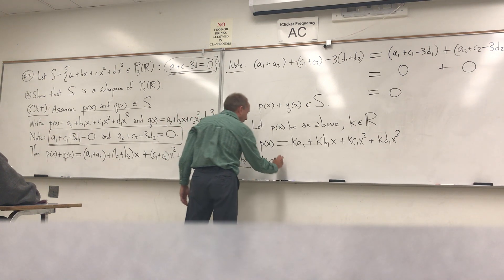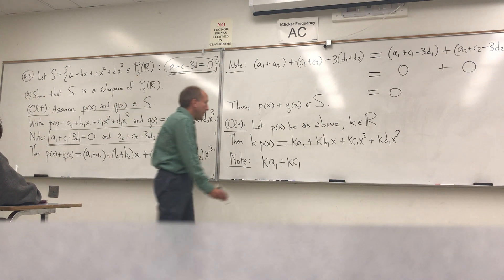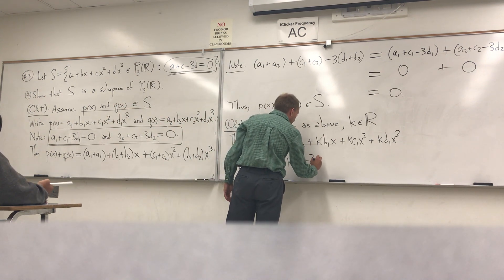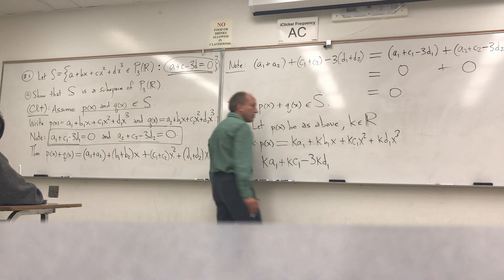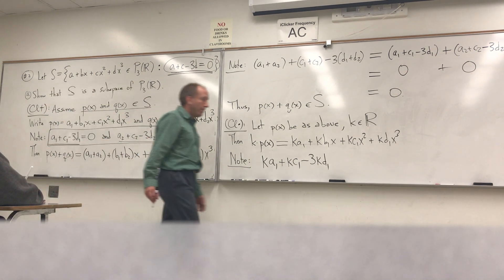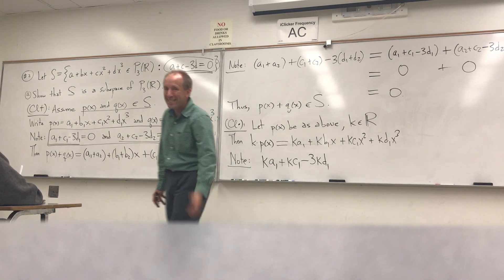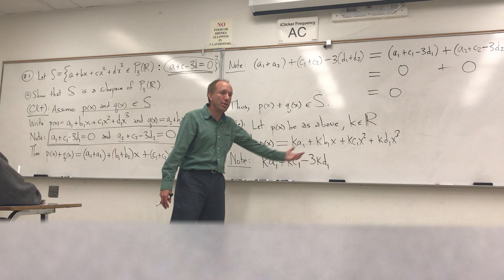So I'm going to make another little calculation. I'm going to note that if I take the constant term, which is ka1, and I add the x squared term, which is kc1, and I subtract 3 times the x cubed term, which is 3kd1, I'm going to try to convince myself that that equals zero. Let's not write equal zero yet. I want to derive that that's equal to zero. So what would you suggest I do first?